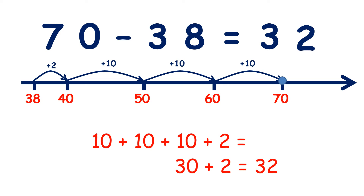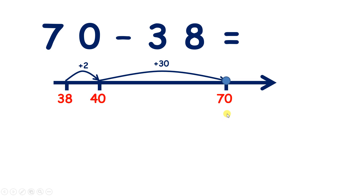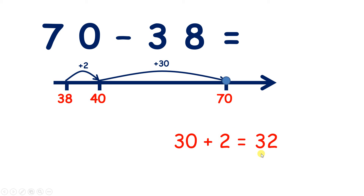Or if we want to work this out using fewer steps, we can add 2 to make 40, and then if we're on 40 and we need to get to 70, we need to add 30. So there we have 30 plus 2, which gives us 32.